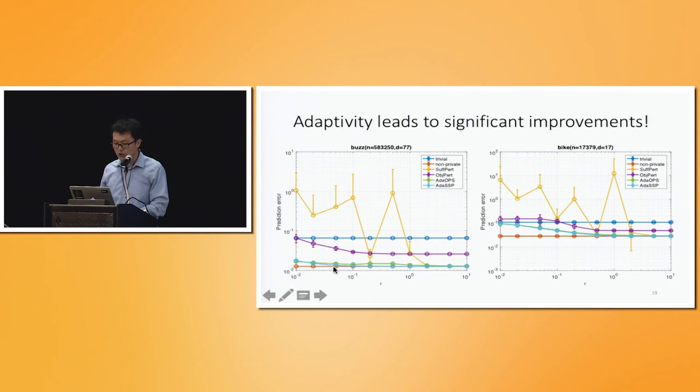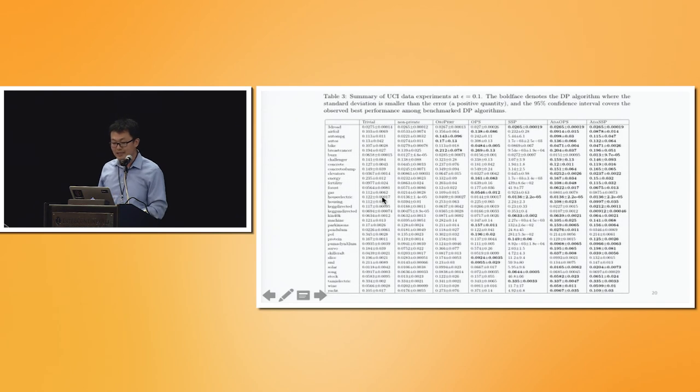As we can see, the two proposed algorithms in both cases would converge to the non-private performance when epsilon is pretty reasonable. And it gives us a few orders of magnitude improvements over baselines. And this is just two of the examples of the 36 datasets that we tested on UCI. So out of the 36, on 31 of them, this DSSP outperforms everything else. And on 29 of them, this DOPS is within the two standard deviations of the best alternative. And that particular number is only nine for the best of our competitors.